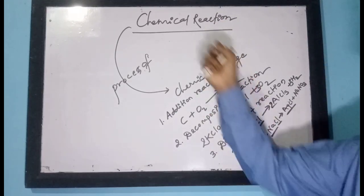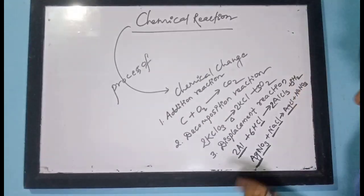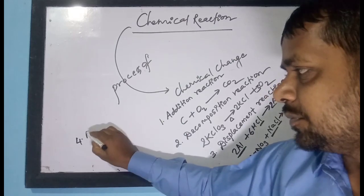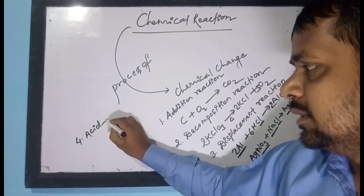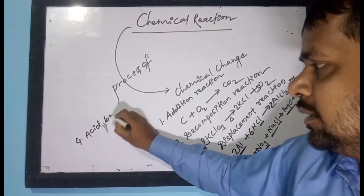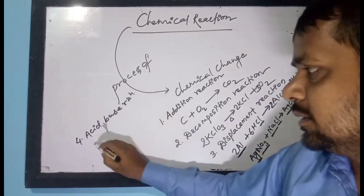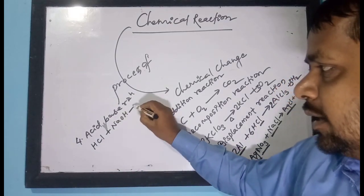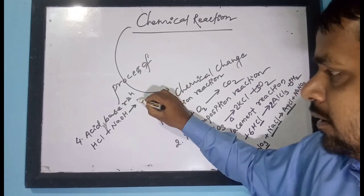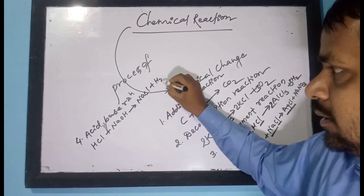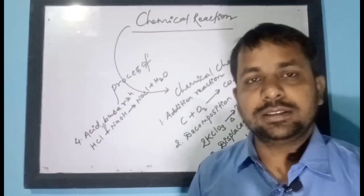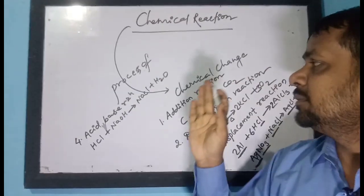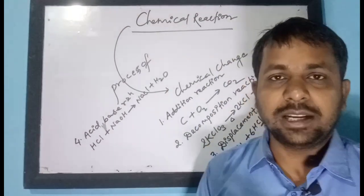By this process also, chemical reaction takes place. The fourth method of chemical reaction is the acid-base reaction. For example, HCl reacts with NaOH to form NaCl plus H₂O. Note: how we write and balance this chemical reaction will be studied in the next video. Here we are only studying the mechanism and types of chemical reaction and their definitions.